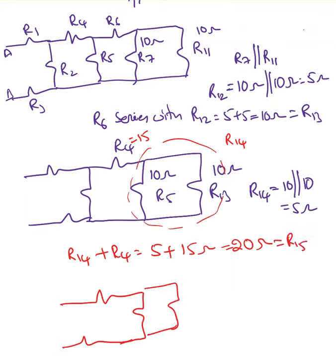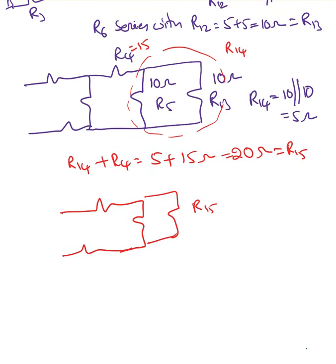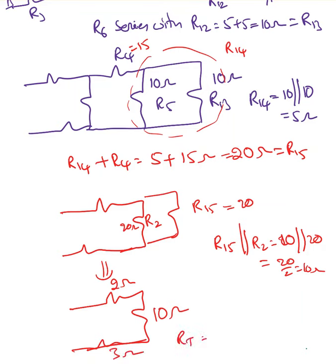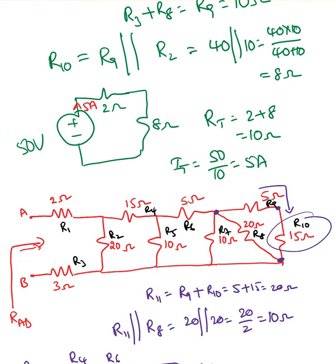R15 is parallel with R2: 20 parallel with 20 = 10 ohms. The final circuit has 2 ohms, 10 ohms, and 3 ohms. So R_total = 2 + 10 + 3 = 15 ohms.